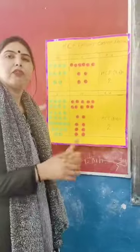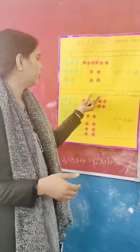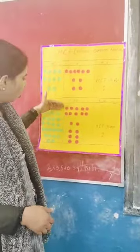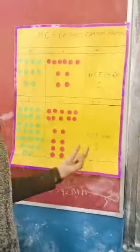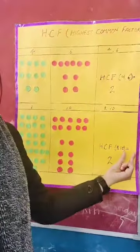For example, here we can repeat same procedure for number 8 and 10. By repeating all these steps we find that HCF of 8 and 10 is 2.